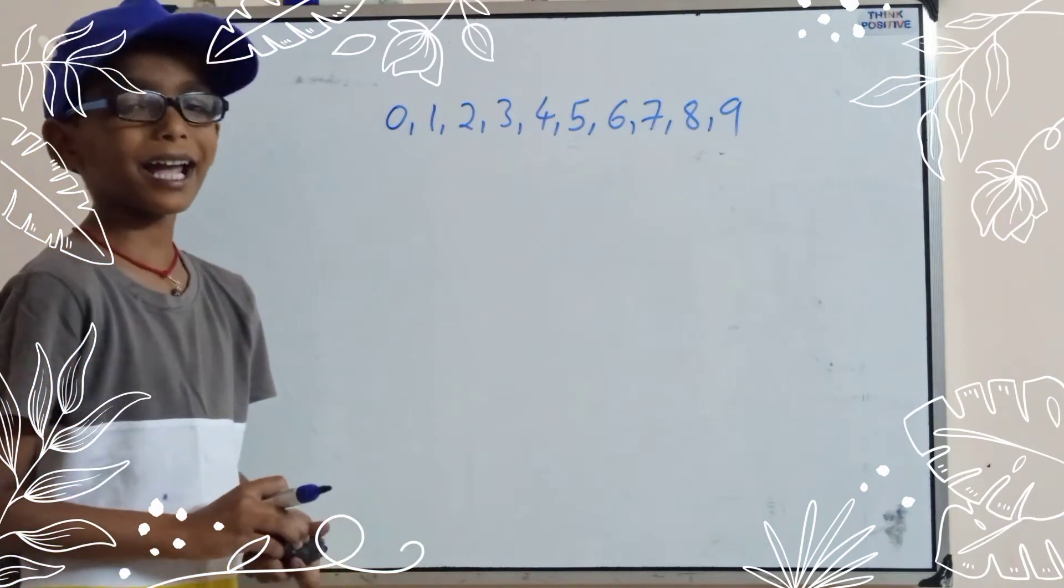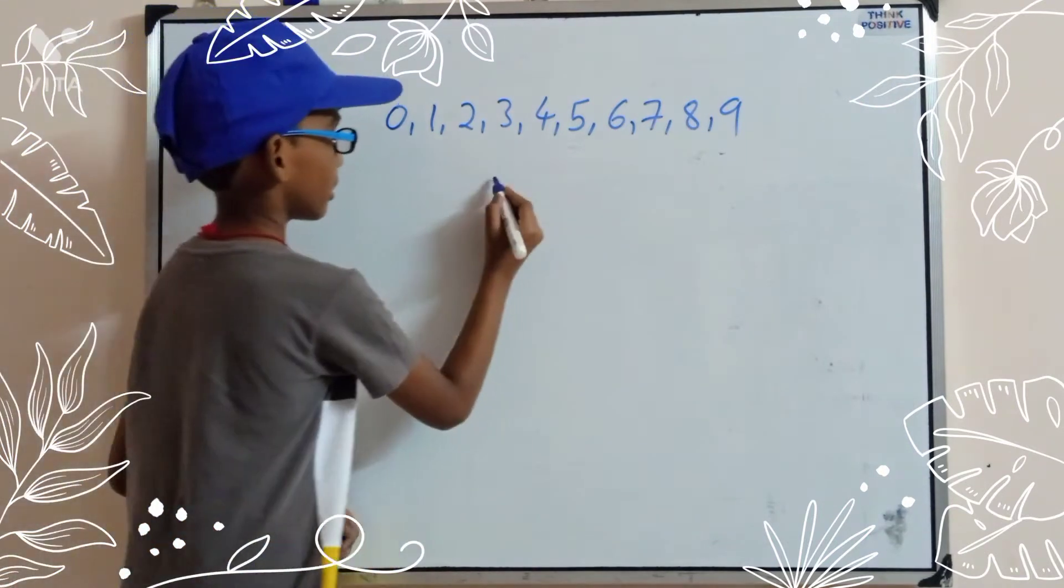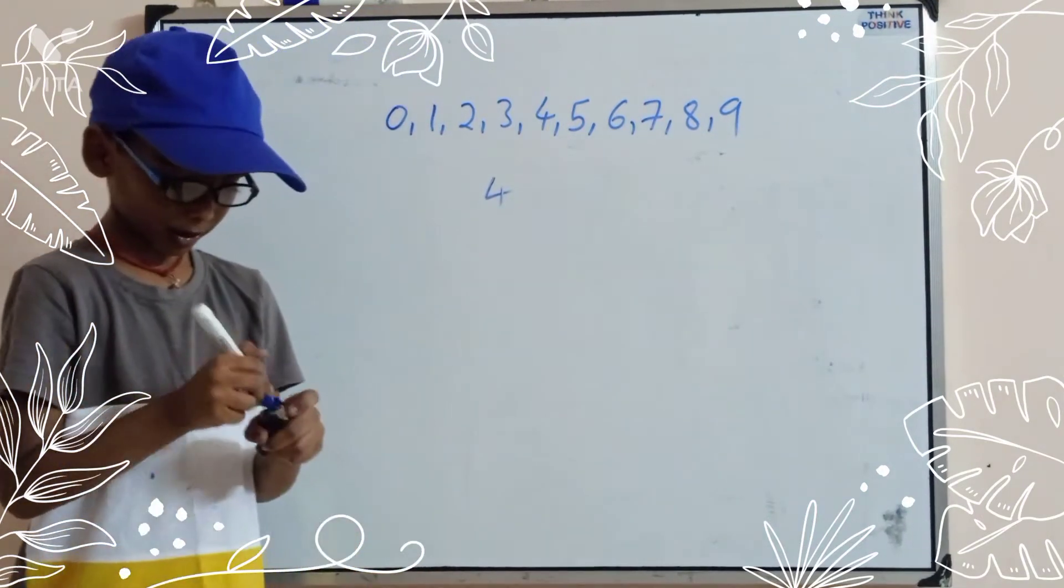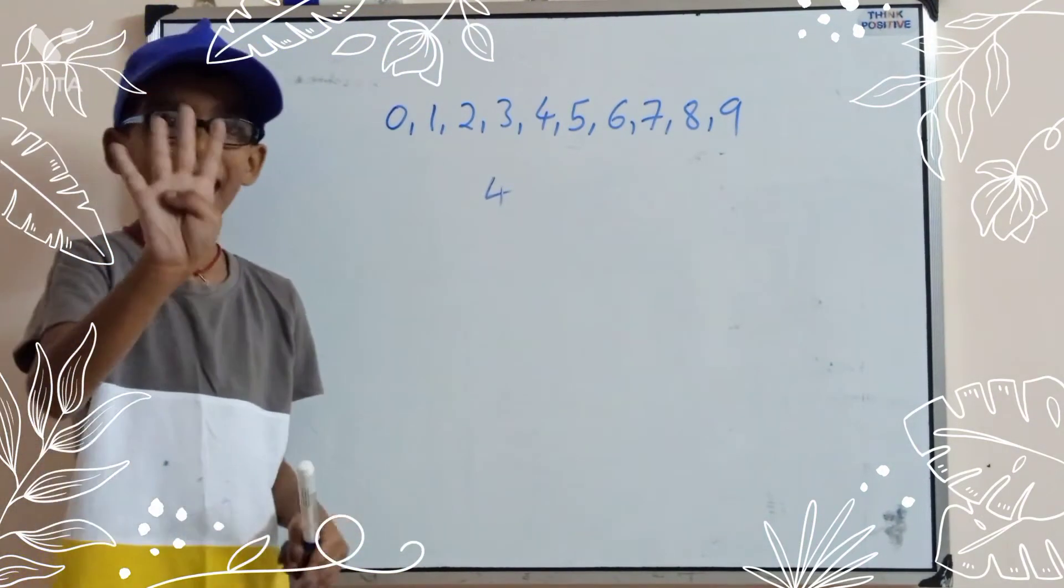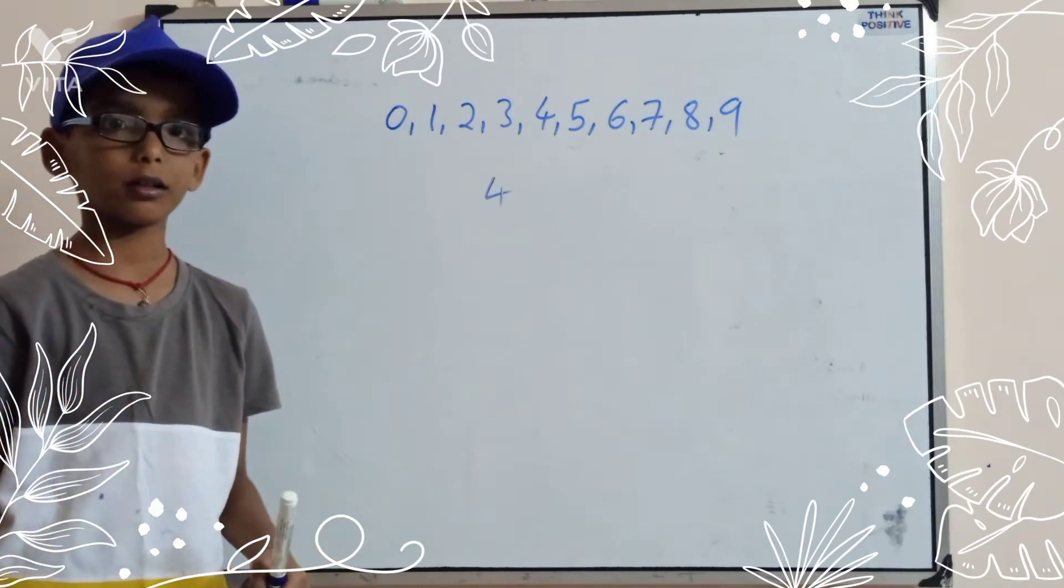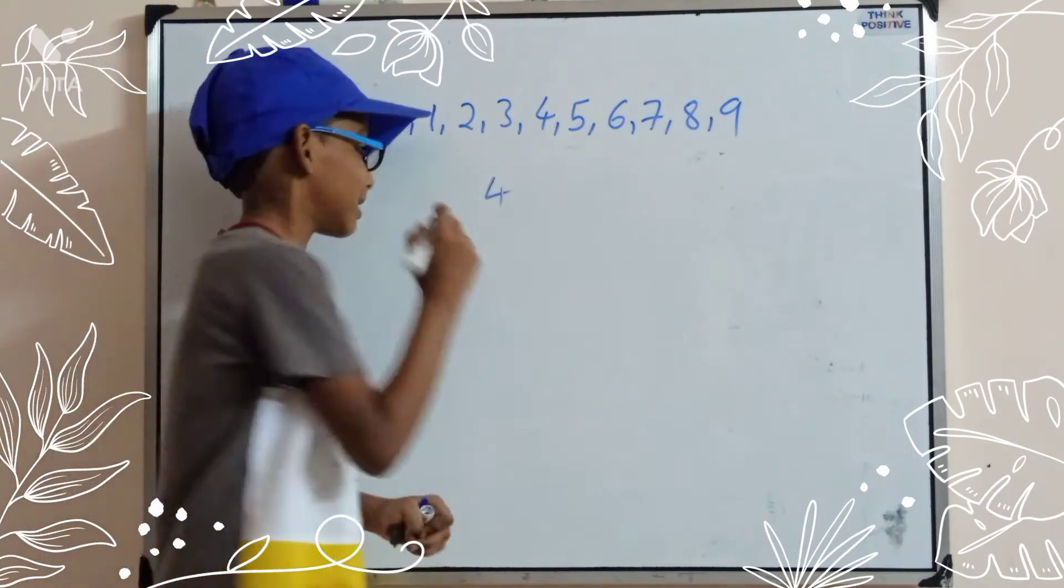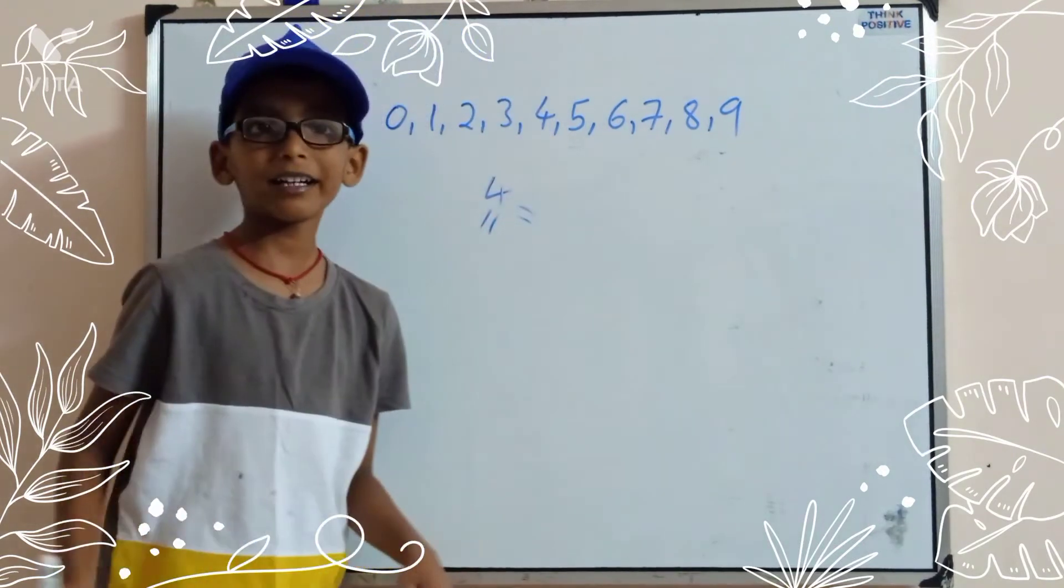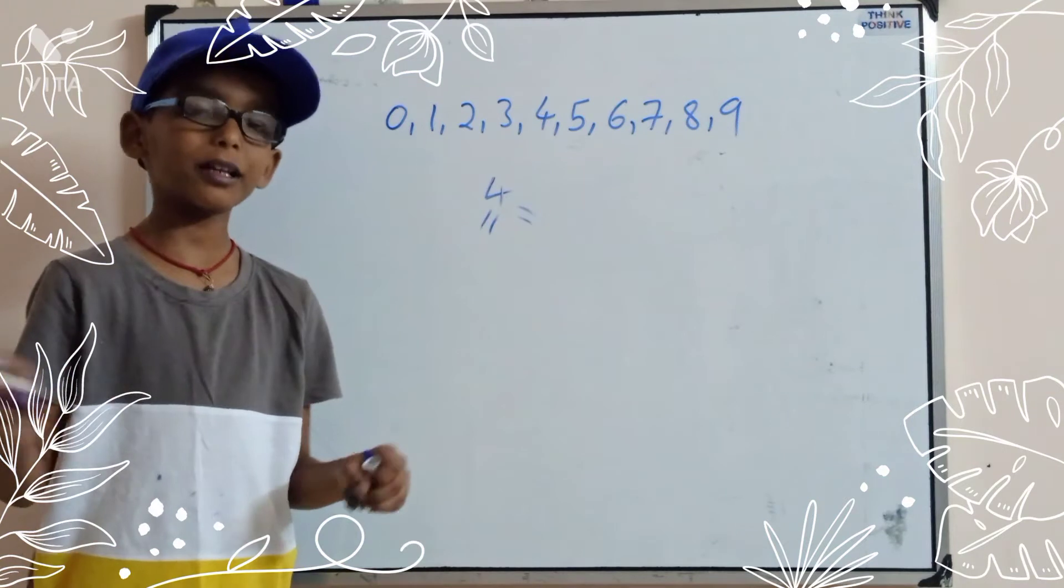Suppose I will take 4. This is even number. Why? Because I have 4 chocolates. My sister also wants. I will take 2, my sister also 2. That's why even number.